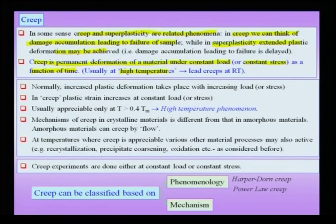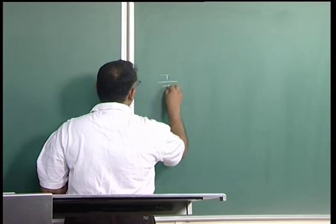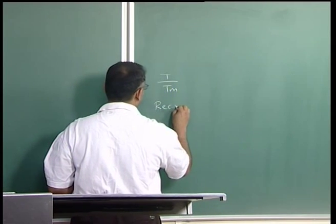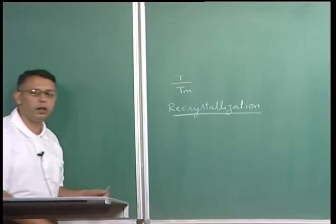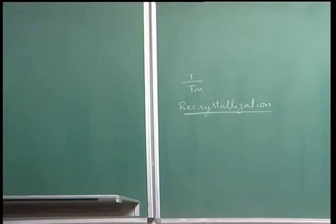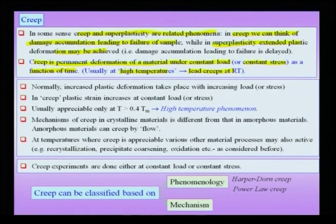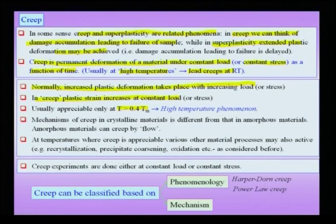Creep is a high-temperature phenomenon, but we must think in terms of homologous temperature T/Tm. If I am close to or above the recrystallization temperature, creep becomes very important. For example, lead at room temperature is already at high homologous temperature, so a load hung on a lead wire will cause creep at room temperature. Creep rates become appreciable above about 0.4–0.5 Tm. Mechanisms of creep in crystalline materials differ from those in amorphous materials — in amorphous materials creep can resemble viscous or Newtonian flow, while in crystalline materials many mechanisms contribute.